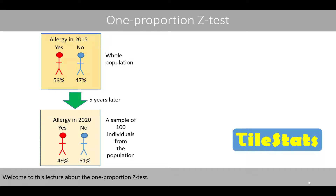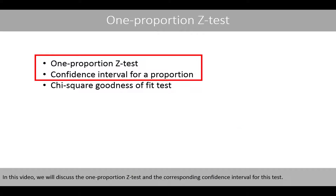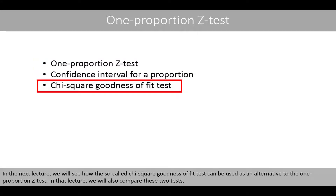Welcome to this lecture about the one-proportion Z-test. In this video, we'll discuss the one-proportion Z-test and the corresponding confidence interval for this test. In the next lecture, we'll see how the chi-square goodness-of-fit test can be used as an alternative to the one-proportion Z-test, and we'll also compare these two tests.